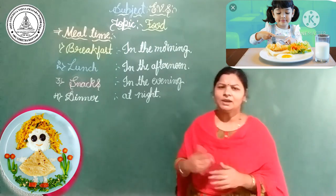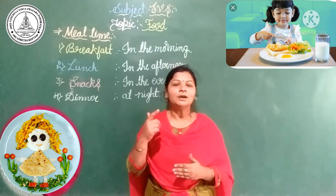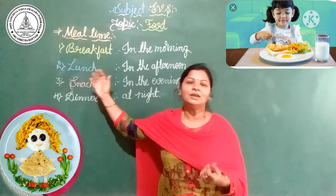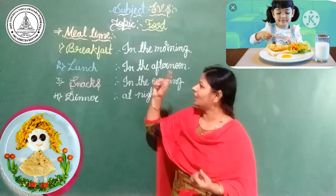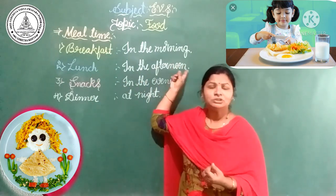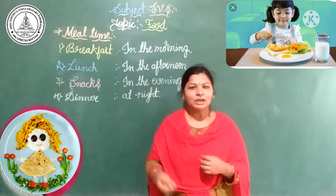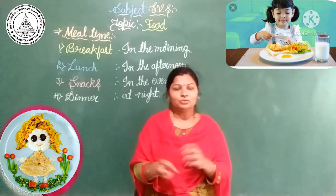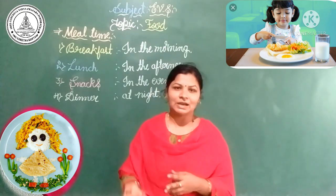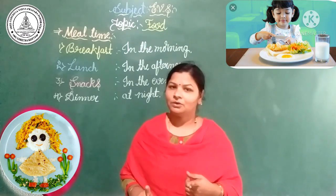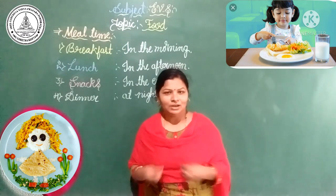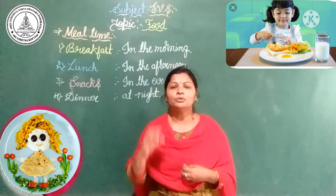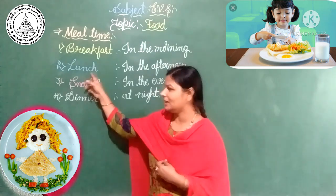Breakfast is what we have in the morning. By this, we get the strength and energy to do many activities, and the day starts from breakfast. Next, we have food in the afternoon — we call that lunch. For lunch, we eat rice, roti, dal, and use vegetables as a salad like cucumber, and curds. That is the afternoon meal, which we call lunch.